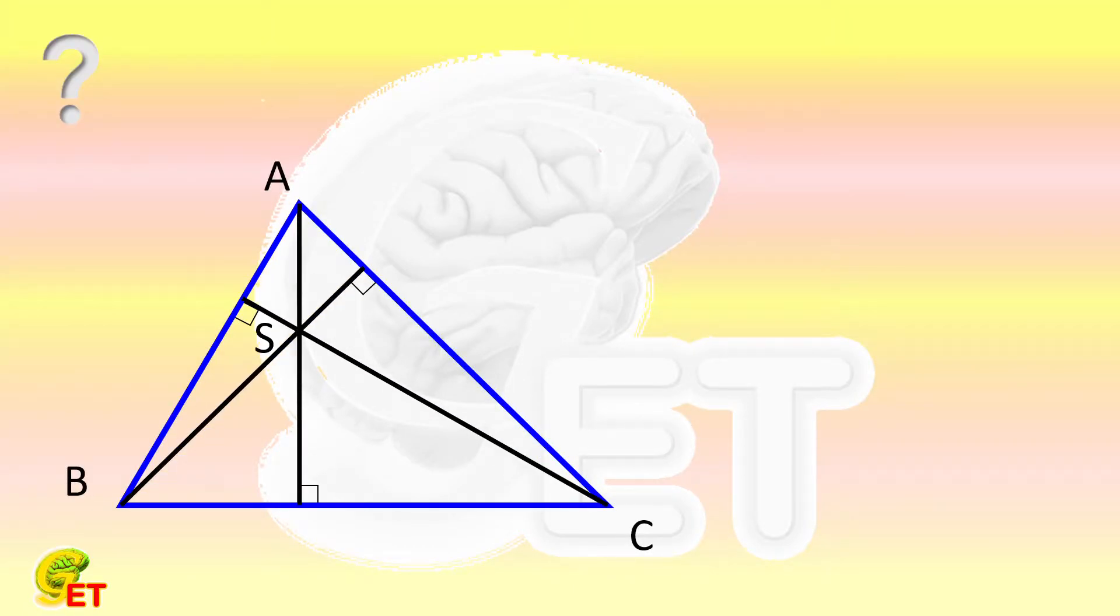There is an acute triangle ABC. Its 3 altitudes intersect at point S. Given that the lengths of AB and SC are equal, can you prove that angle ACB is equal to 45 degrees?